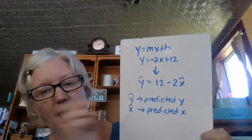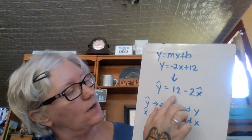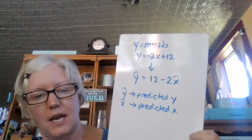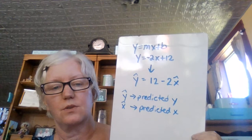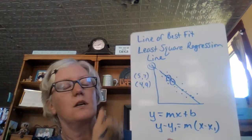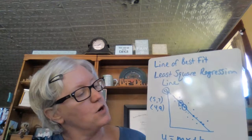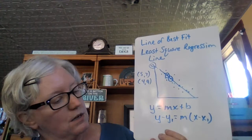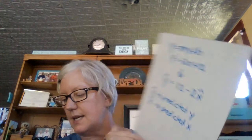Now we're going to change it into statistical language. We call this y-hat — hat like a hat on your head — and we switch these two around, so it's y-hat equals 12 minus 2x-hat, where y-hat and x-hat are the predicted x and y values. Remember, this wasn't the actual line; it was an estimation of the line that would go through those dots.